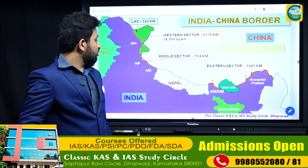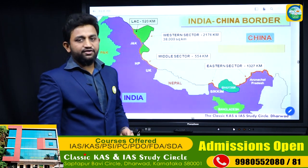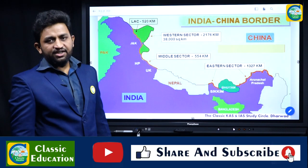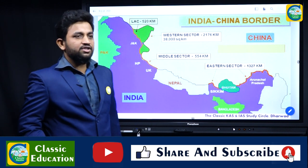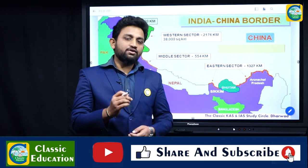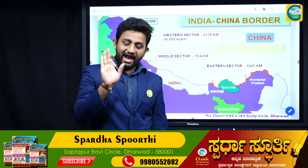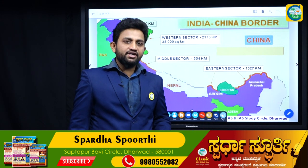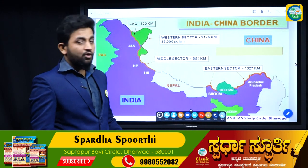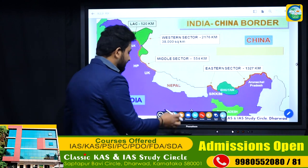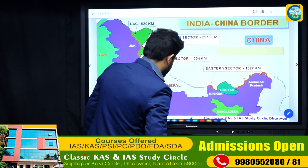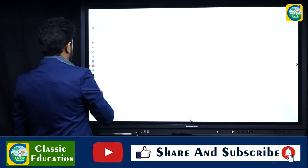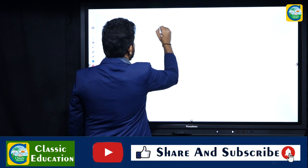To understand the source of all this, you have to understand Mao Zedong of China, who was responsible for the cultural revolution. His strategy was called the Hand, Palm, and Finger strategy. Let me go to the whiteboard to explain in detail.